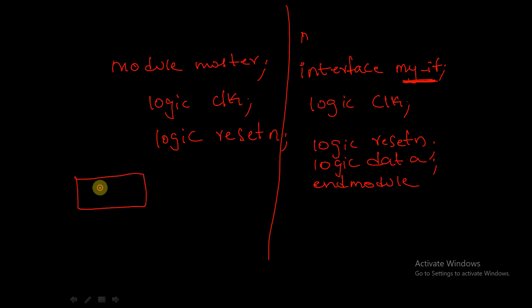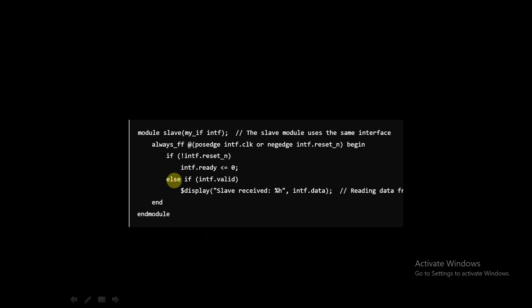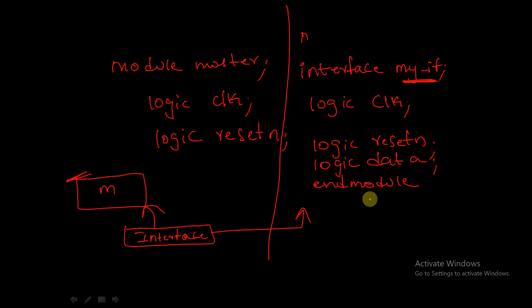Diagrammatically: master accesses signals from the interface with the help of the interface instance. Now let's see how the slave accesses signals. In module slave, we again create the interface instance: my_interface is the interface name and intf is the instance name. Using this instance we access intf.reset_n and intf.ready, another signal declared in the interface definition.